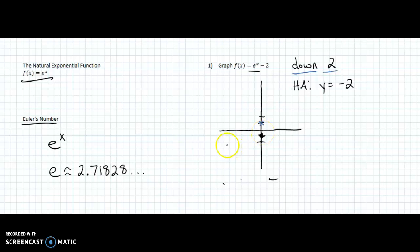My horizontal asymptote goes through negative 2. And then e is bigger than 1. It's 2.718. So this is exponential growth. So this curve will come through this point, and then it will get bigger and bigger.